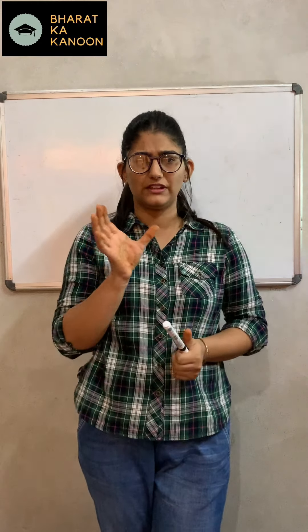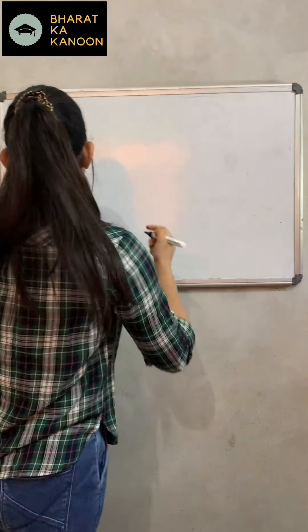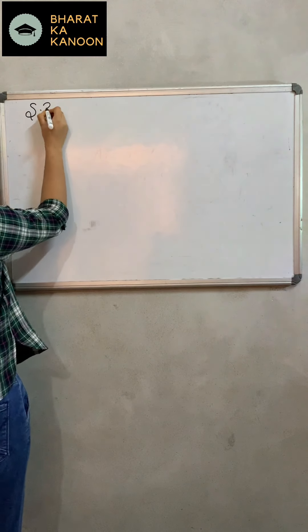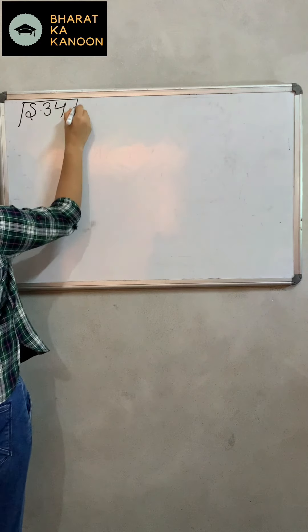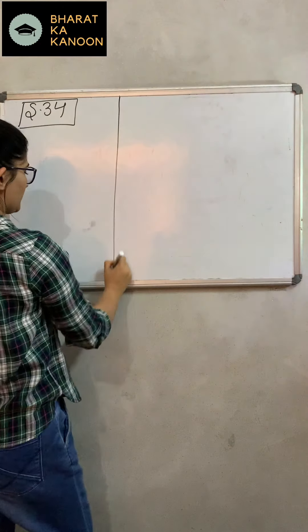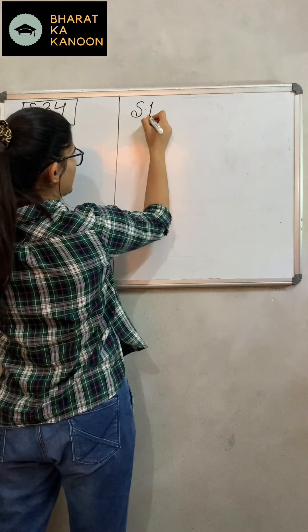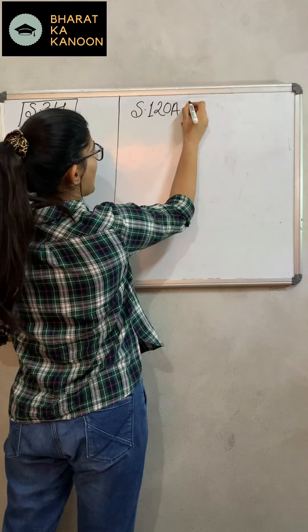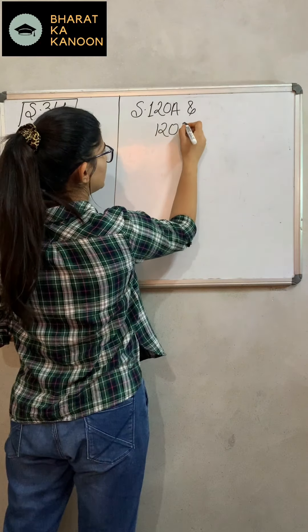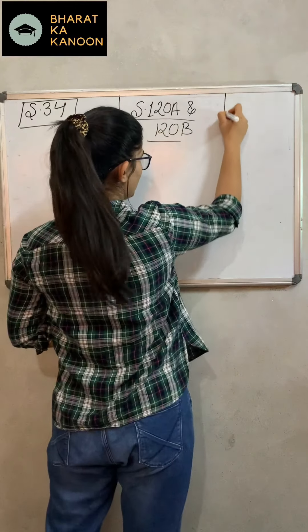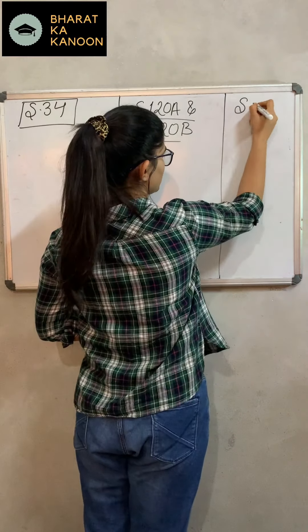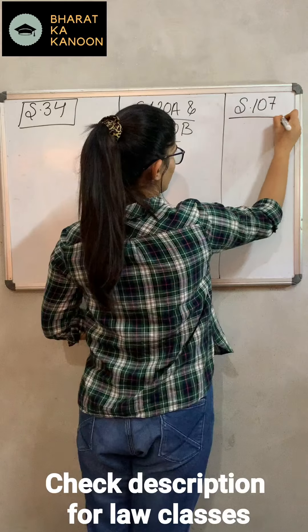Hello everyone. Today I will be taking up the differences between abetment, common intention, and criminal conspiracy in a brief sense. Starting with common intention, which is section 34. All three topics are from IPC only. The next one is criminal conspiracy, that is 120A and 120B. And the third one is abetment, section 107.